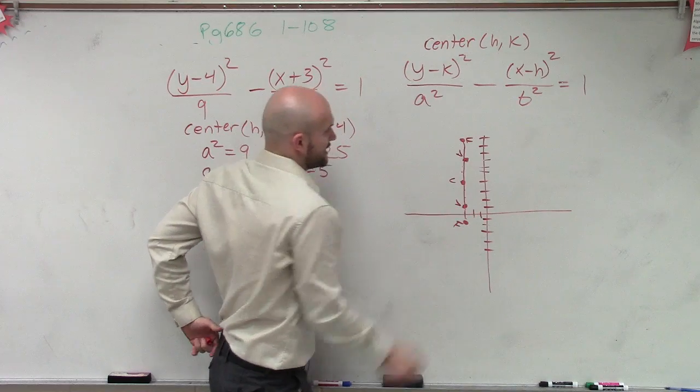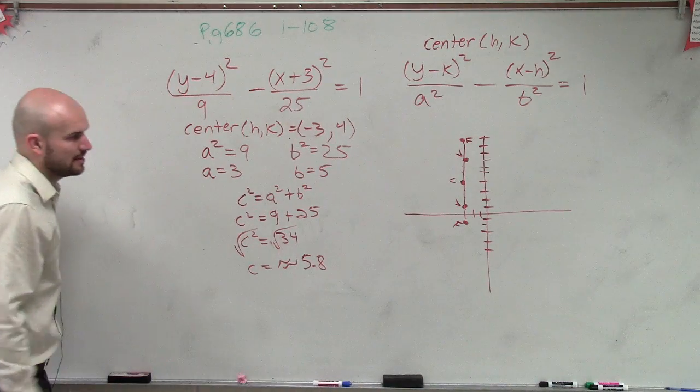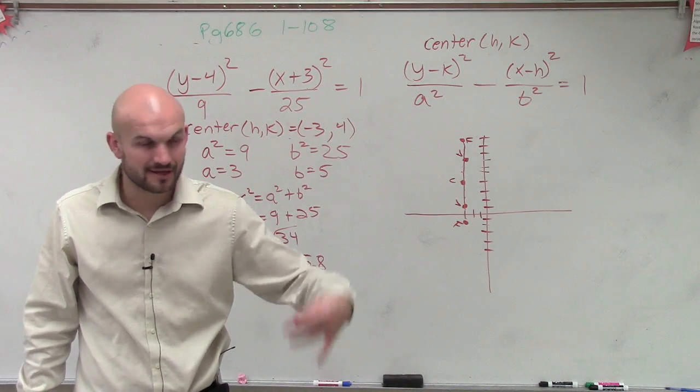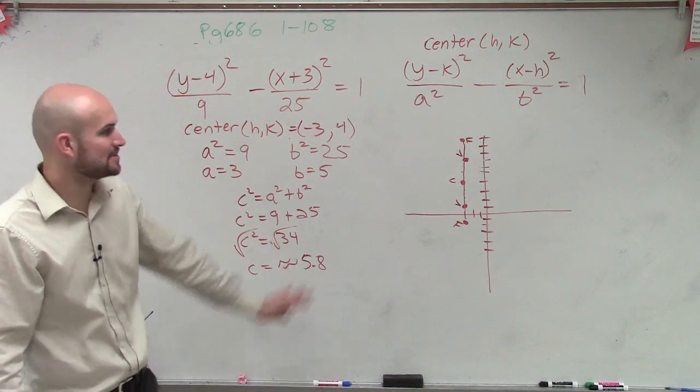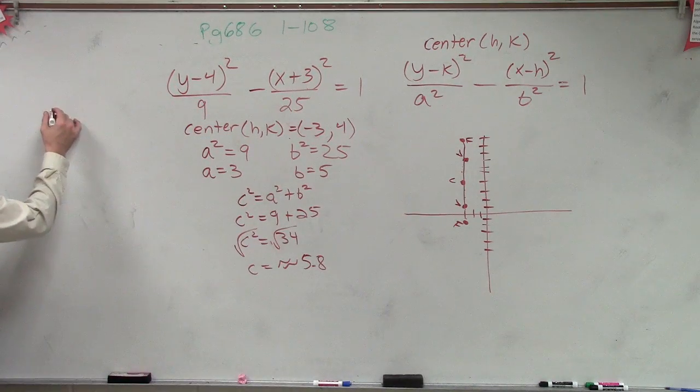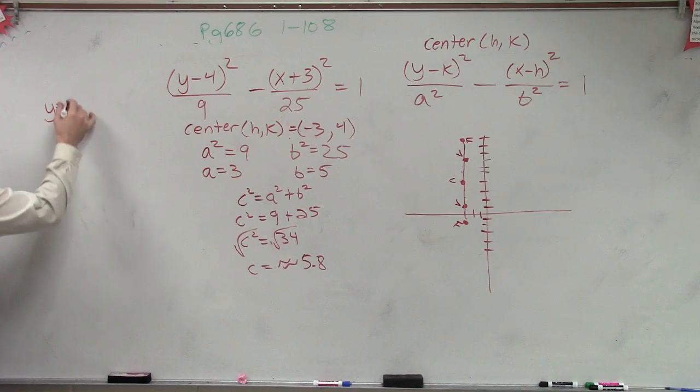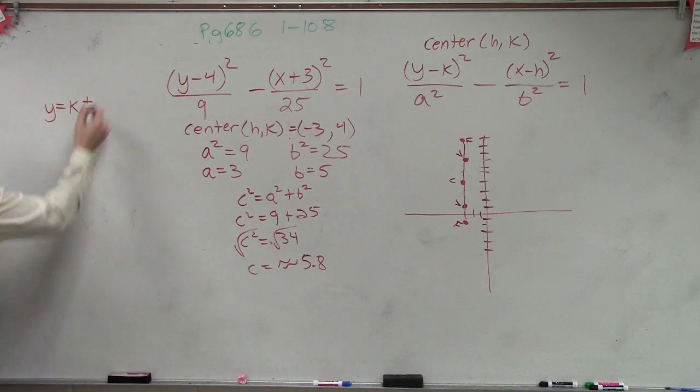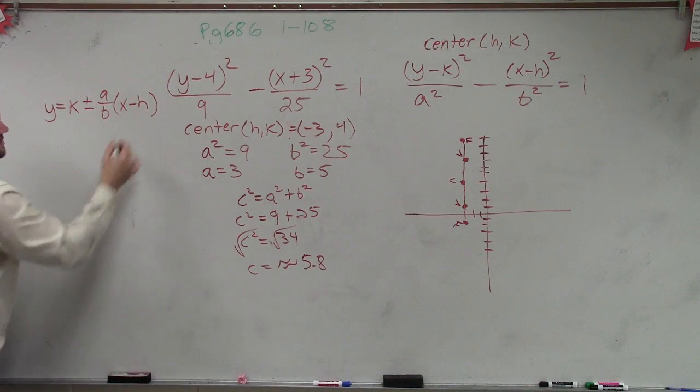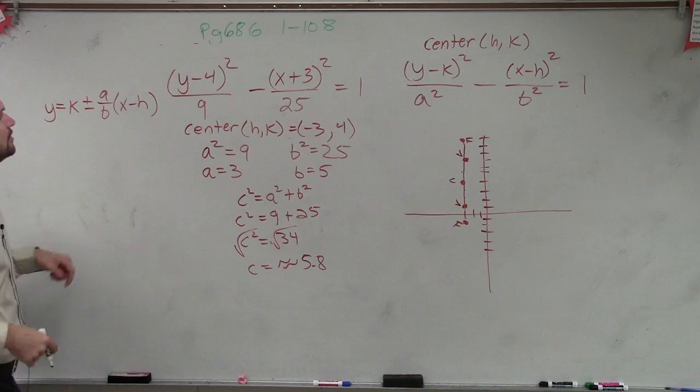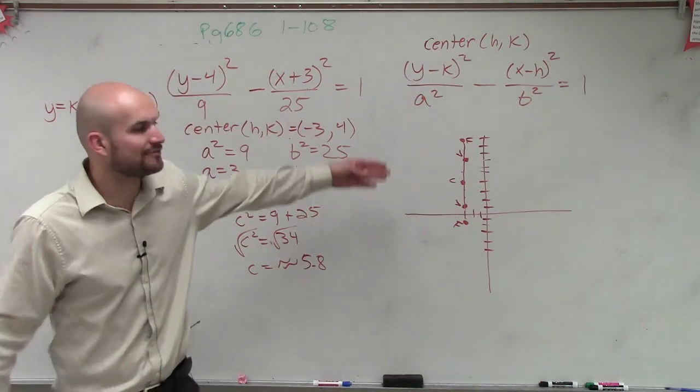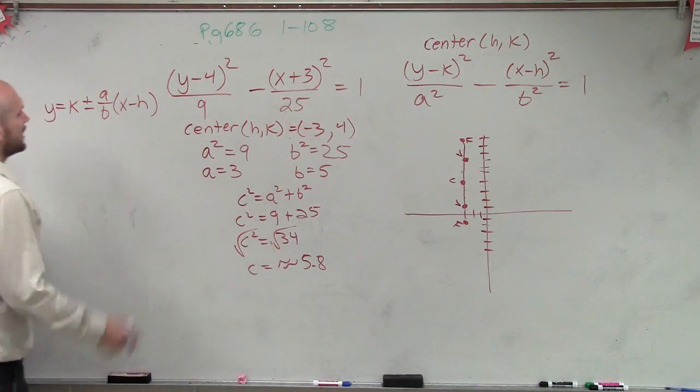So now I know my graph is going to open up and it's going to open down because my points all lie on this transverse axis. However, remember, we have asymptotes, right? So hyperbola has our asymptotes. So remember, since we have a vertical, we know that the equation for asymptotes of a vertical equation is y equals k plus or minus a over b times x minus h. For a horizontal, it's b over a. For a vertical, it's a over b.